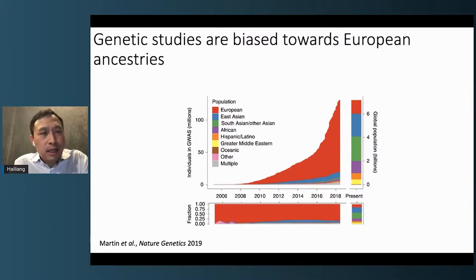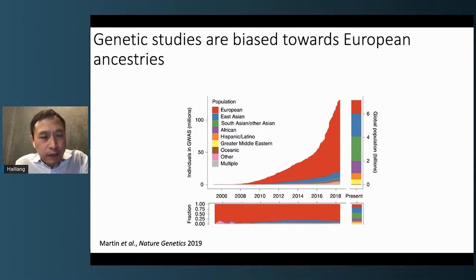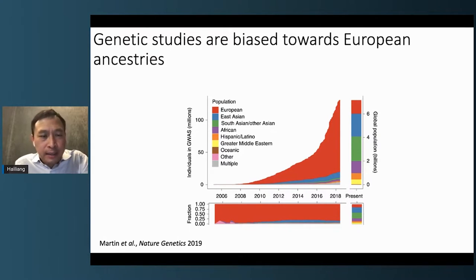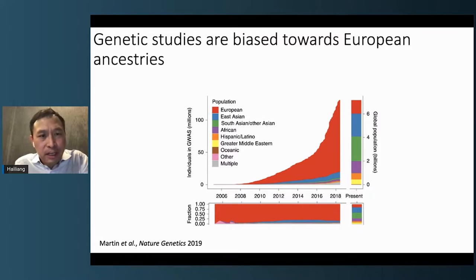Despite the clear importance of including all ancestral populations in genetic studies, unfortunately genetic studies are severely underrepresented for non-European populations. This is a figure taken from Alicia Martin's 2019 paper. As you can see, even very recently in 2018, genetic data sets were predominantly from the European population, with non-European individuals comprising only a small proportion of the total.